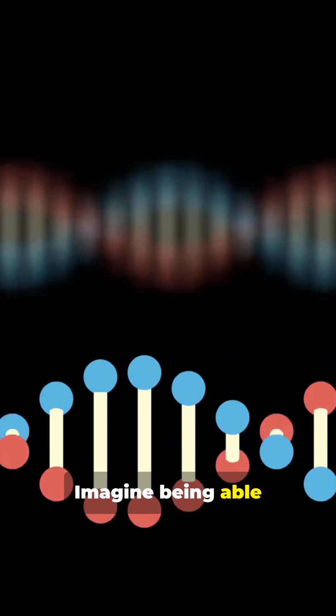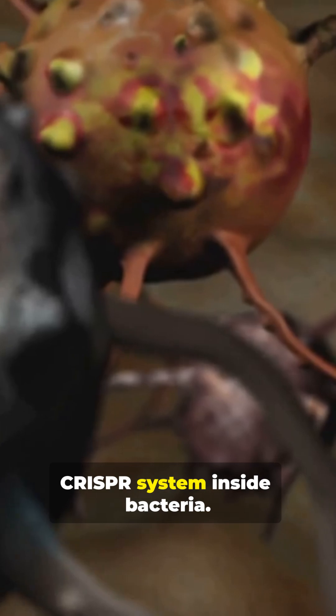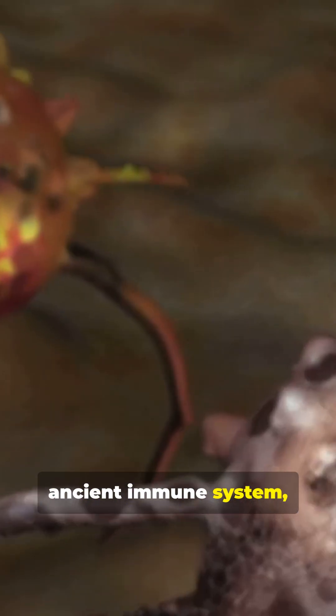Stop scrolling. Imagine being able to fix a typo in your body's instruction manual—your DNA. For decades, fixing genetic diseases was impossible. Then scientists discovered the CRISPR system inside bacteria. It's the bacteria's ancient immune system used to find and destroy invading viruses.